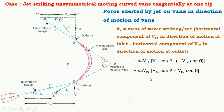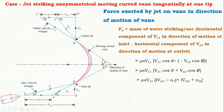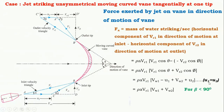From trigonometry, the value of Vr1 cos(theta) is equal to Vw1 minus U1, and the value of Vr2 cos(phi) is equal to Vw2 plus U2, from the velocity triangles. Since U1 and U2 are the same, that is the velocity of the vanes, after simplification we get: rho A Vr1 into bracket Vw1 plus Vw2.